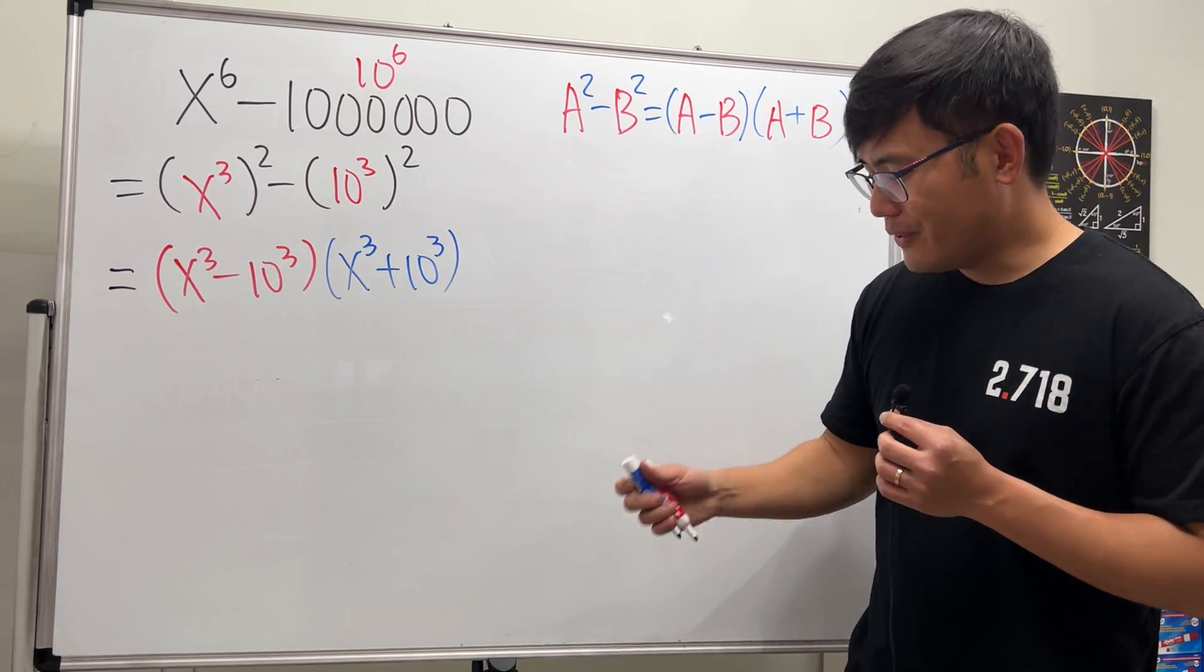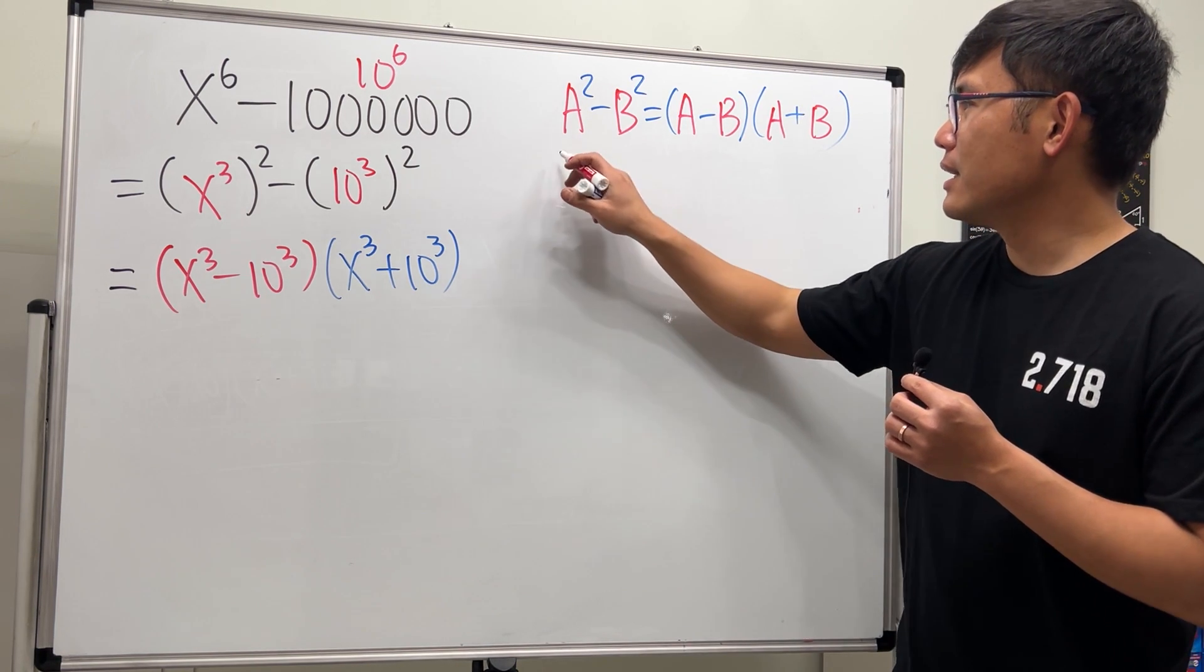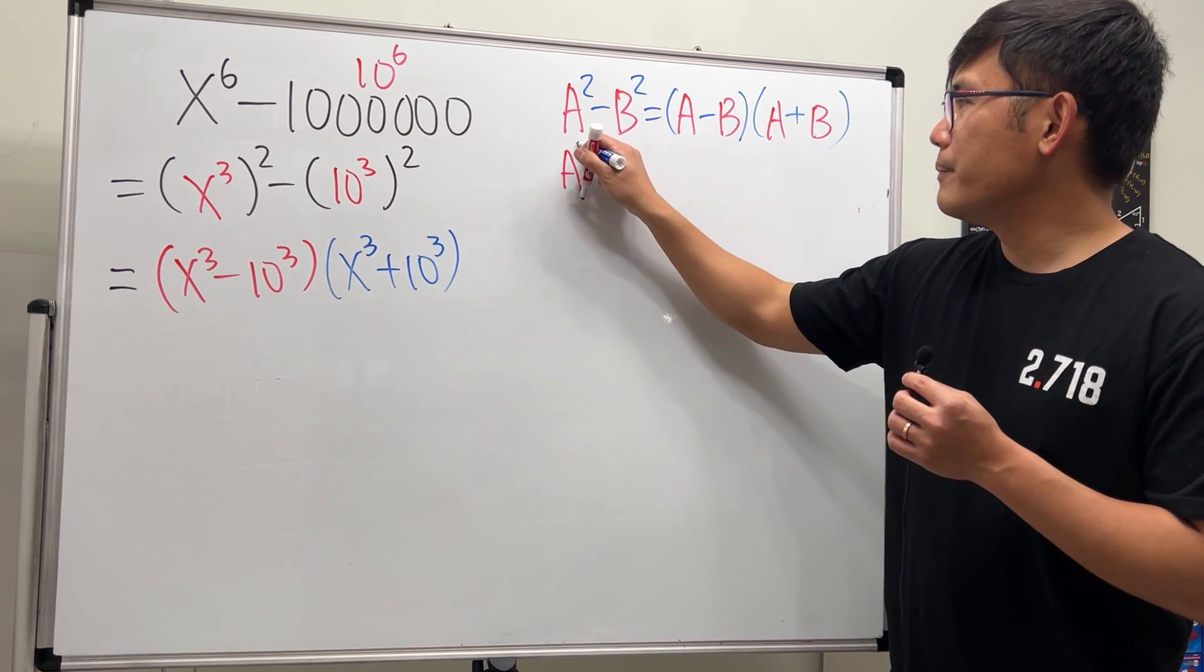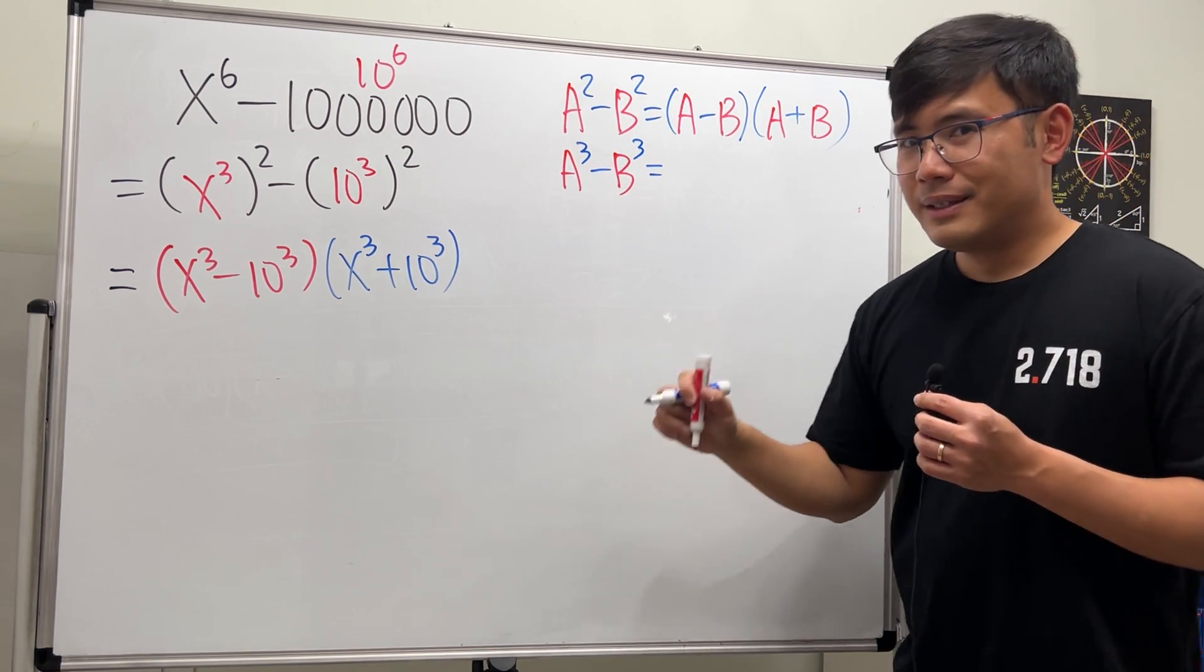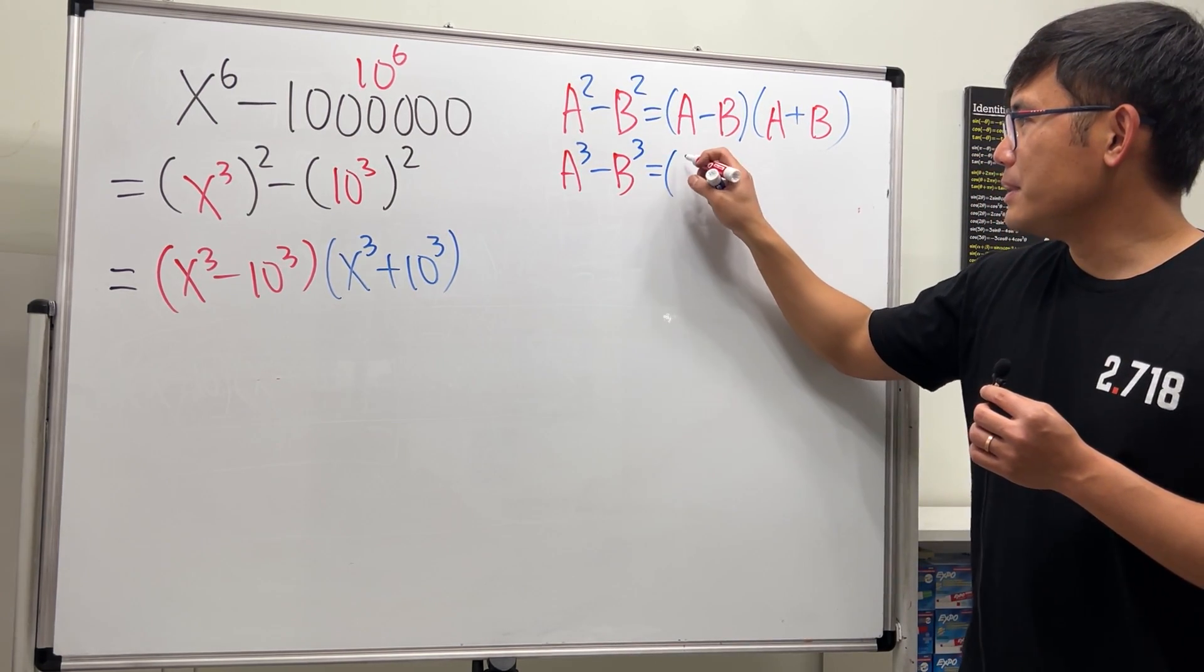And to continue, remember the formulas. I'll put it on the side for you guys. When we have a to the 3rd power minus b to the 3rd power, first factor, we get a minus b.